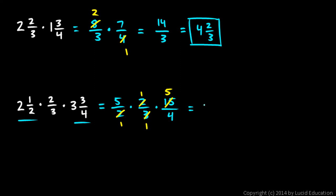5 times 1 times 5 is 25, and then 1 times 1 times 4 is just 4, so 25 over 4. And 4 goes into 25 6 times. 6 times 4 is 24, so there's 1 left over, so it's 6 and 1 fourth.